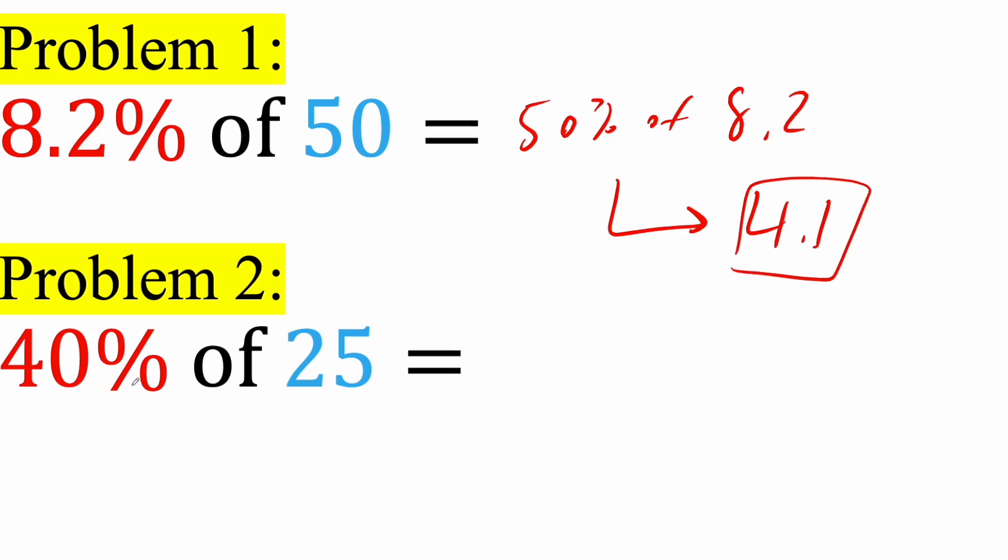Last one, 40% of 25. Instead, I can say 25% of 40. Now, 25%, that's just a quarter. That's like 1 over 4. 1 over 4 times 40. So, 40 divided by 4 is 10. So, 40% of 25 is just 10. And that's pretty much it for this video.